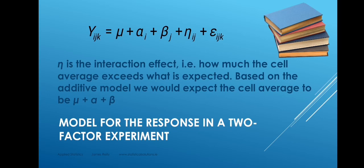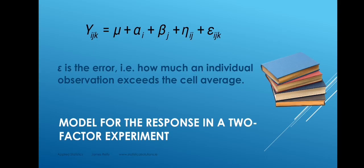We also have eta, the interaction effect: how much does a cell average exceed the average you would expect to find in that cell? If the row and column effects were added together, you would expect the average in a cell to be mu — the grand average — plus alpha, the effect based on that row, plus beta, the effect of that column. But the actual average in the cell might differ, and eta is how much greater the average in the cell is compared to what's expected. Finally, epsilon is the error: how much higher or lower an individual observation is compared to the average that arises in that cell.